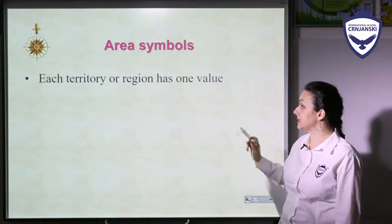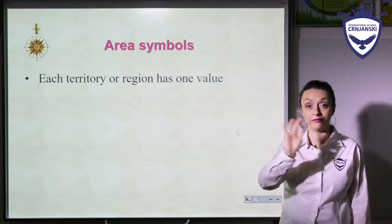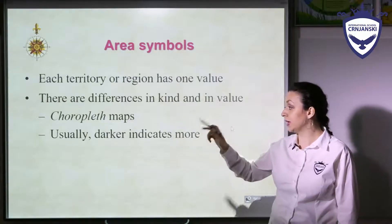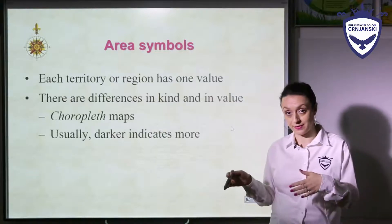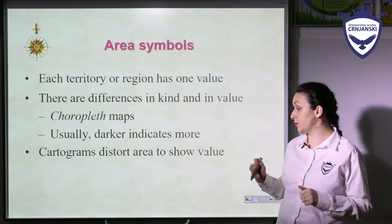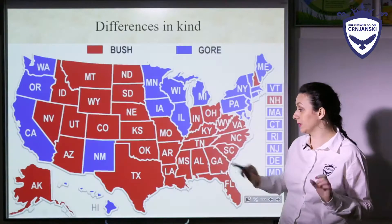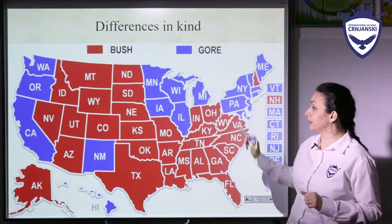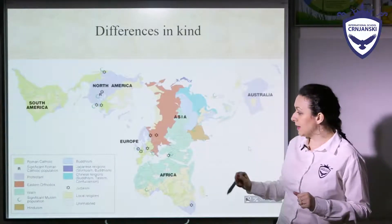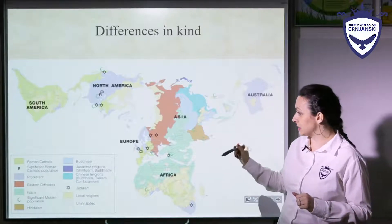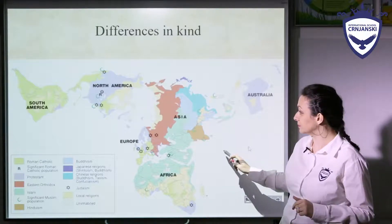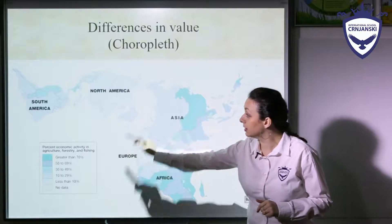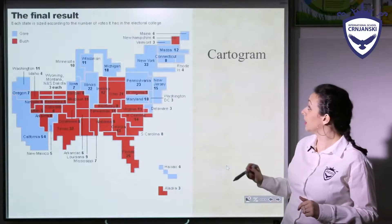What about area symbols? Each territory or region has one value on the map. There are differences in kind and in value. There are choropleth maps — where darker color usually indicates more of something. Cartograms distort area to show some value; for example, they are used for election results in the USA, showing different votes. There are also maps showing differences in kind, such as a map of different religions in different countries and continents, and differences in value shown by different color shades.